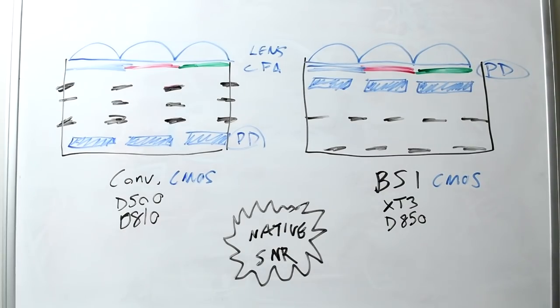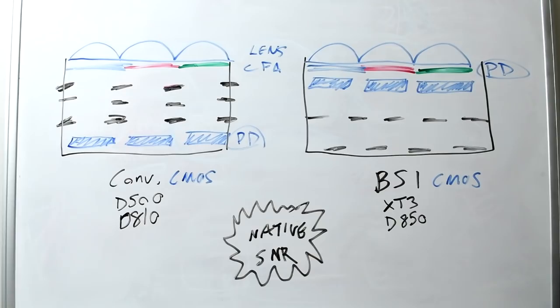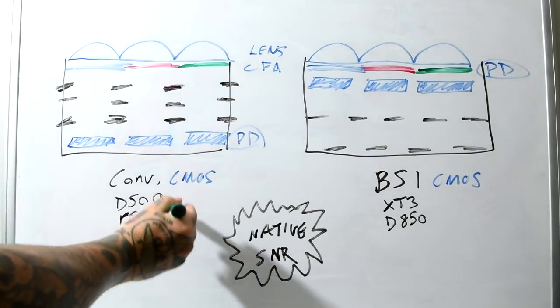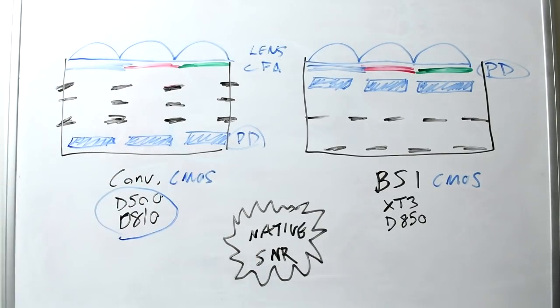Backside illuminated kind of sounds like when you get a rectal exam from your doctor and he sticks a flashlight up your butt. It's not actually illuminated from the backside, but let's actually define what a BSI sensor is. And on the left, we have a conventional CMOS, as we typically find in countless cameras, D500 to D810.